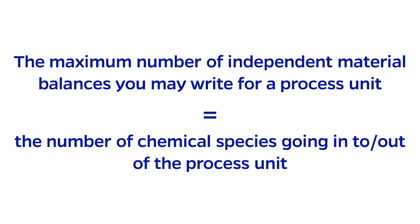The rule that you must remember is that the maximum number of independent material balances that you may derive for a process unit is equal to the number of chemical species involved with that process unit.